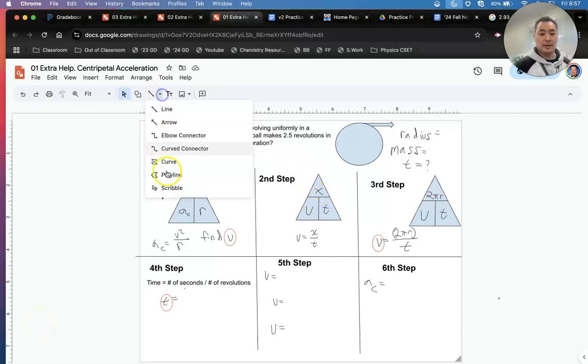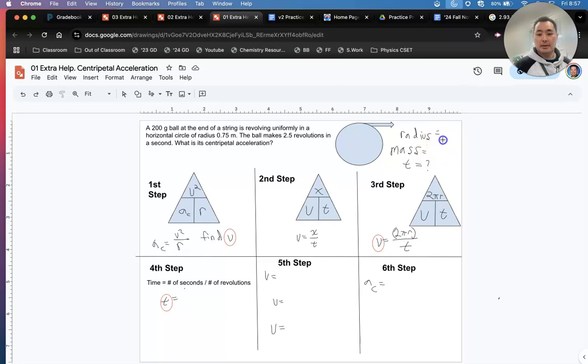Write that down. Take your pen or pencil, everybody. Put 0.75 on the packet. And then, Elijah, once you write that down, tell me mass.